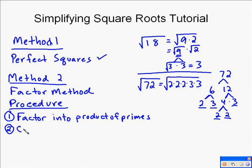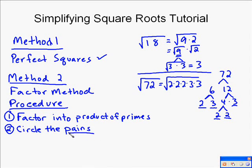After factoring into primes, we go back into the problem and circle the pairs. Circling them tells us that 2 times 2 is a perfect square, and we do the same with 3 times 3 — that's also a perfect square. So we know we can take the square root of 2 times 2 and the square root of 3 times 3.